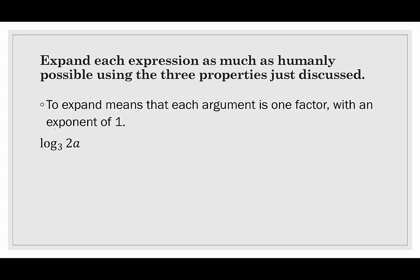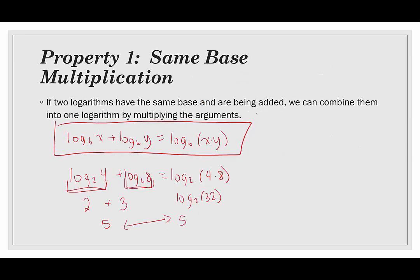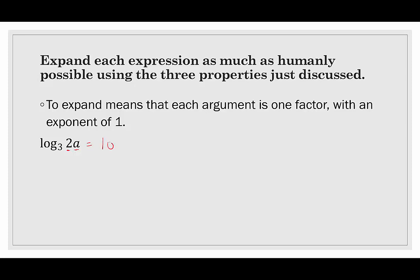Alright, so in our first few examples, we're going to expand each expression as much as humanly possible using the three properties just discussed. When I say expand, that means that each argument is one single factor with an exponent of 1. So we don't have to worry about exponents here. But we have two factors — a factor of 2 here and a factor of a. So we're going to split this up. Because they're being multiplied, this would be same base multiplication. So, starting with this single logarithm, we rewrite it as two separate logarithms: log base 3 of 2 plus log base 3 of a.